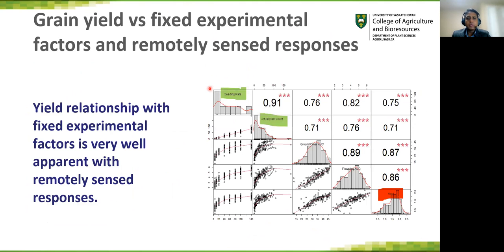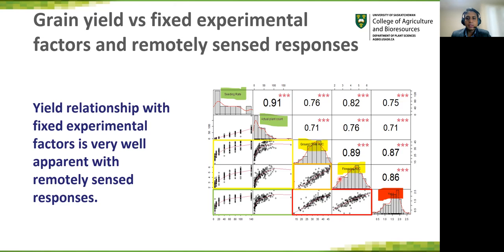We then looked at how grain yield relates to fixed experimental factors — seeding rate and actual plant count — and to remotely sensed responses, which are ground cover and flowering cover. The yield relationship with fixed experimental factors is very well apparent with remotely sensed responses as well. The yield linearly relates to both cumulative ground cover and flowering area, and a strong linear trend is also apparent between ground cover and flowering.